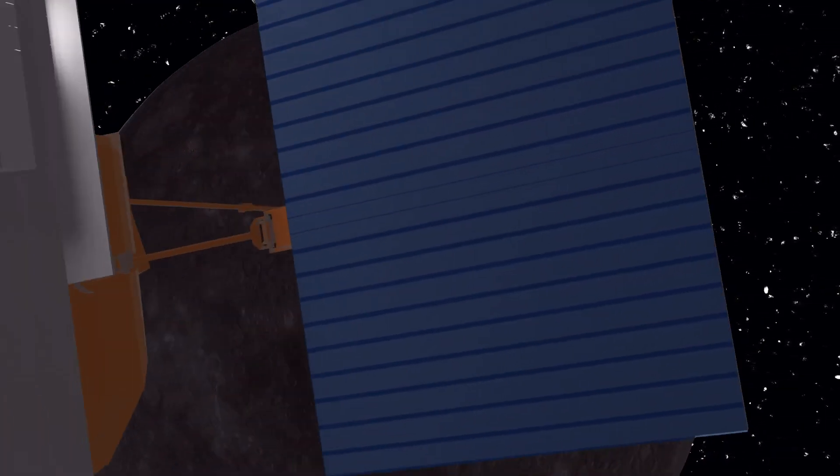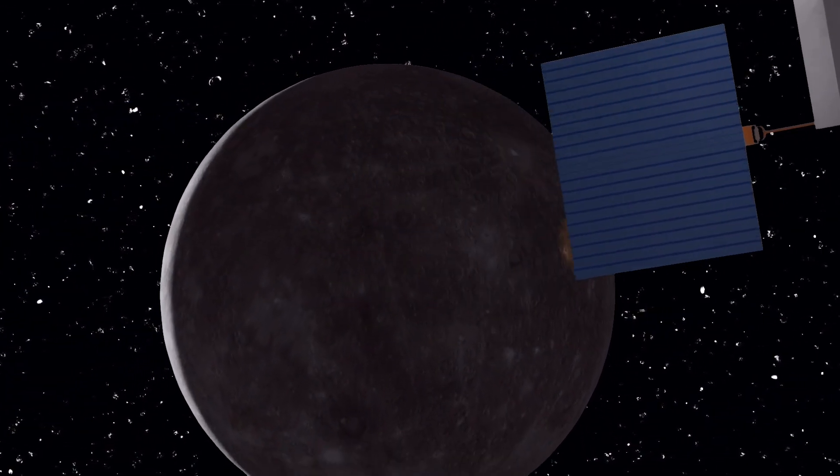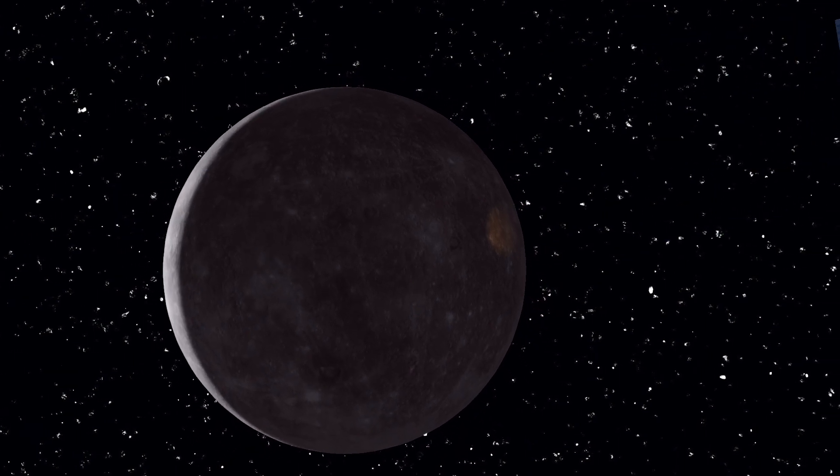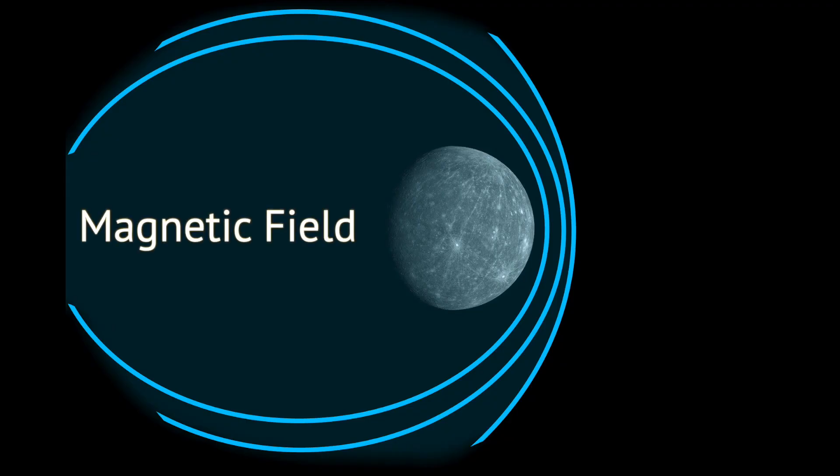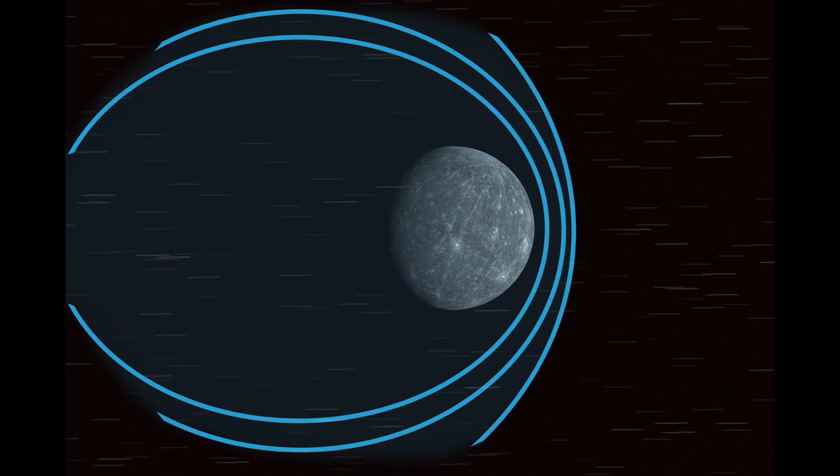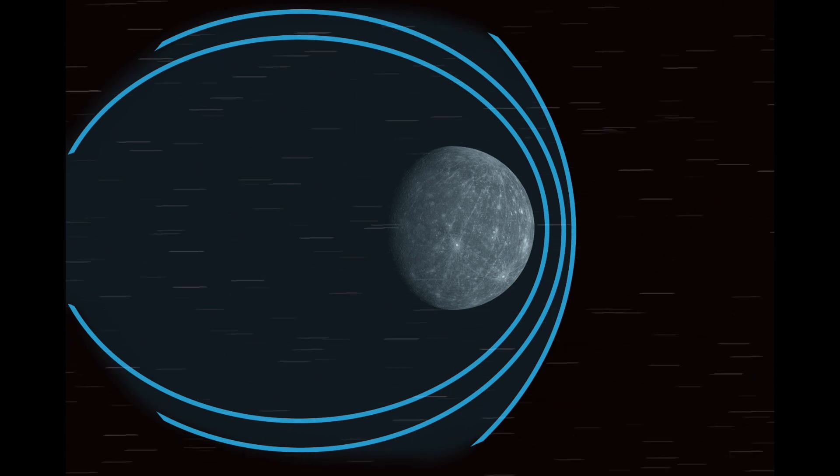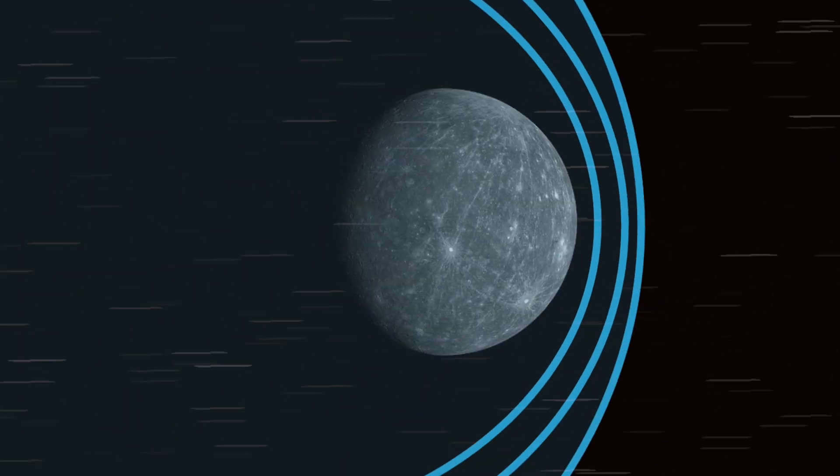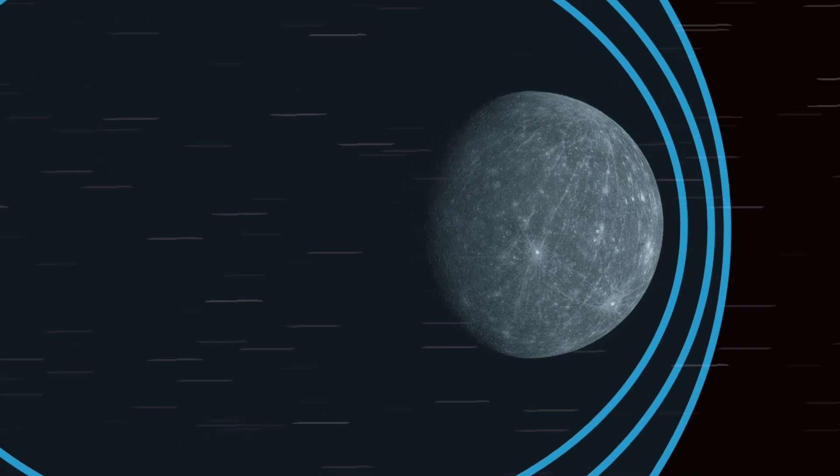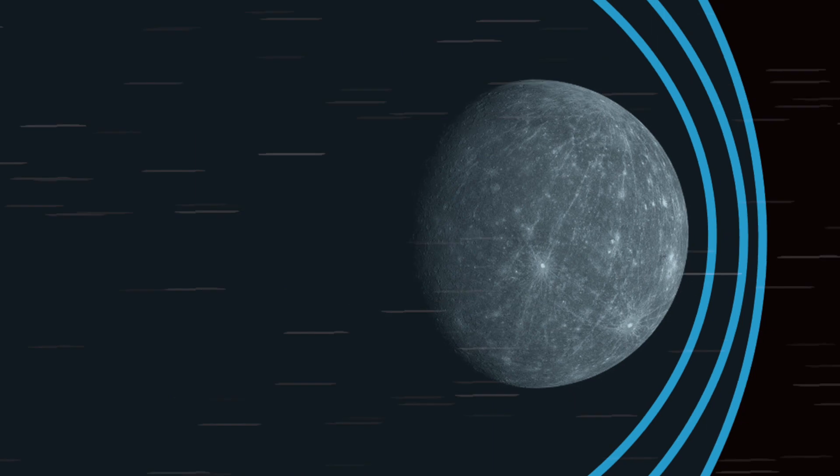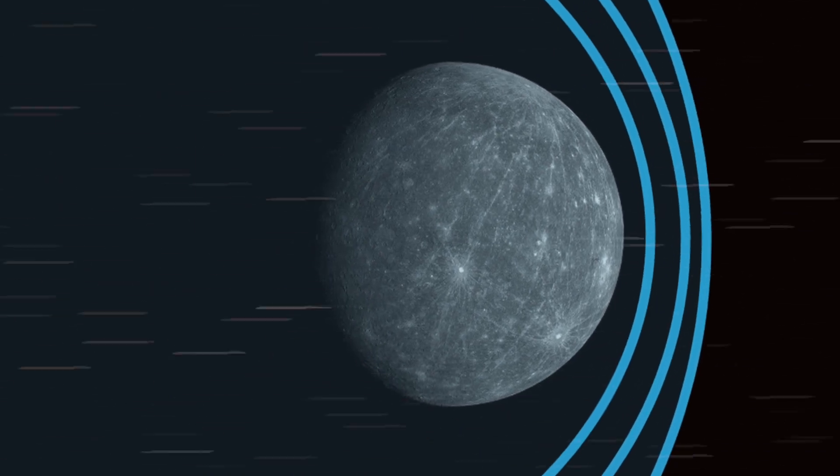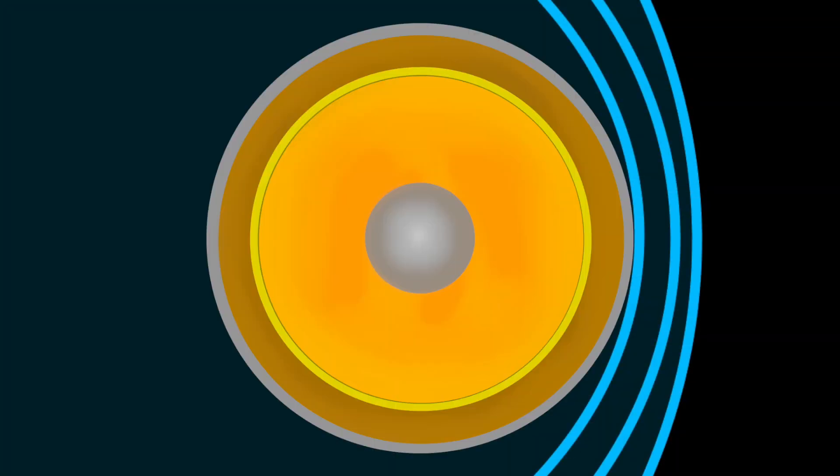The Messenger probe was equipped to study another aspect of this planet that is even harder to see. As it turns out, Mercury has its own magnetic field. When it is mapped out in three dimensions, it takes on a similar teardrop shape to the exosphere. This is because it also responds to the electrically charged solar wind, becoming compressed on one side and elongated on the other. The existence of this magnetic field implies something important about the inside of the planet. It has a partly liquid core.